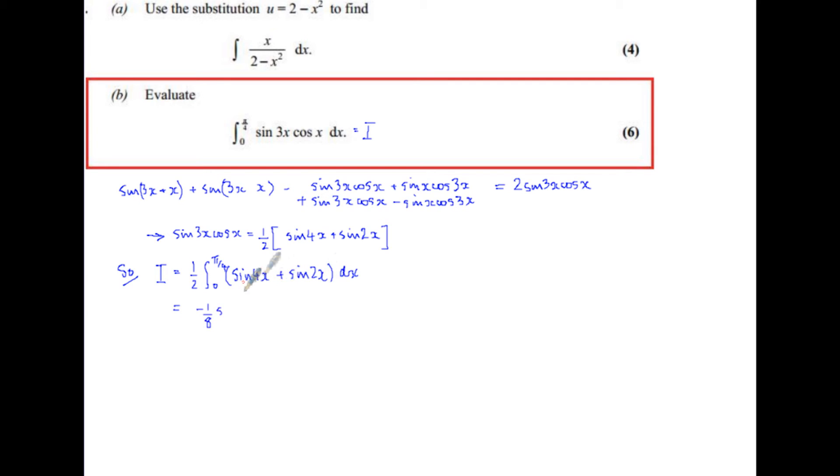So we integrate sin 4x, I get minus an eighth cos 4x. And when I integrate sin 2x, I get minus a quarter of the cos 2x. And I'm going to do that from 0 to π/4.